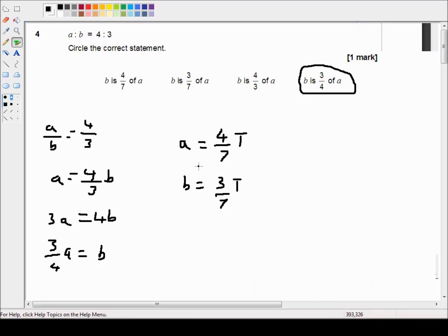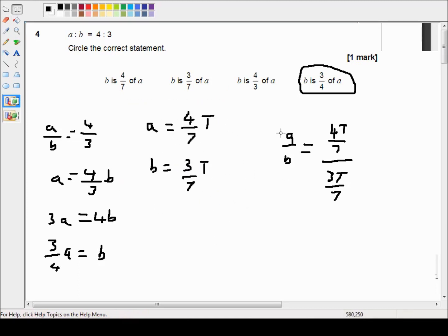Now if we divide A over B, we can say A over B is equal to 4 times the total divided by 7, all divided by 7. And we know that in order to divide we just invert and multiply. So let me just clear some space. Okay so A over B is equal to 4 times the total divided by 7 multiplied by 7 divided by 3 times the total.